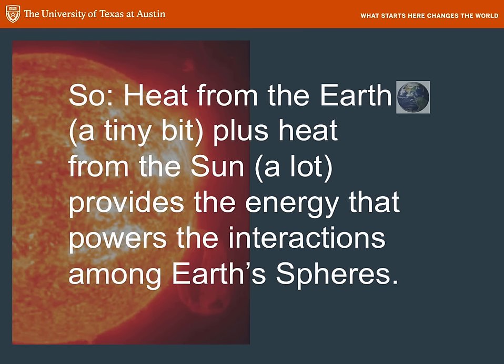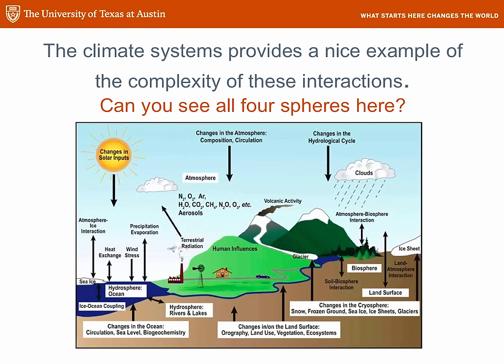So, heat from the earth — a little bit — plus heat from the sun — a whole lot — provides the energy that powers the interaction among earth's spheres. Here's a picture of the climate system, and you can see all of these pieces together in one sketch. You can see the sun and volcanic activity providing energy to drive the system, along with the geosphere, biosphere, hydrosphere, and atmosphere, with arrows pointing back and forth indicating how matter and energy move among these spheres to make the climate system work. You're going to work on a jigsaw today that asks how these spheres interact in complex problems like climate. Have fun!